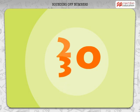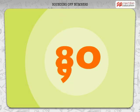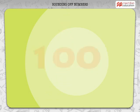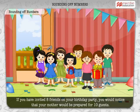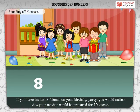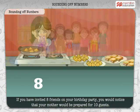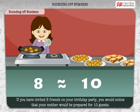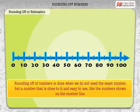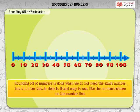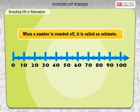We often round off numbers in our day-to-day life. Can you think of examples? Here is one: if you have invited 8 friends to your birthday party, you would notice that your mother would be prepared for 10 guests. Rounding off a number is done when we do not need the exact number, but a number that is close to it and easy to use, like the numbers shown on the number line. When a number is rounded off, it is called an estimate.